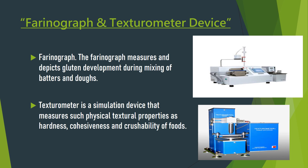The perinograph is a device used to find out the gluten development during the mixing of flour and dough. The texturometer is a device that measures the physical texture properties of any food, such as hardness, cohesiveness, and the friability of food.